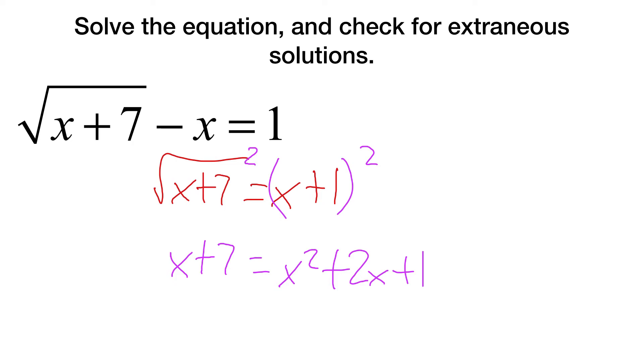At that point, I want to get everything onto one side. Now you might be wondering why, and the reason why is we want it all to be on one side so we can then factor this as a trinomial. So minus x minus 7, minus x minus 7. We end up getting 0 is x squared plus x minus 6.